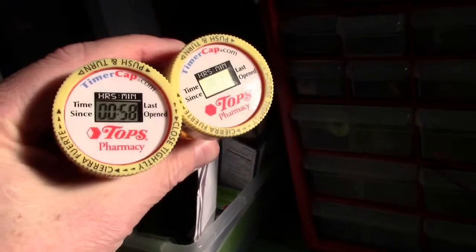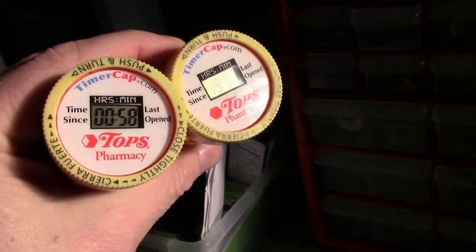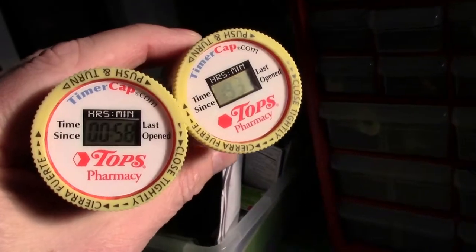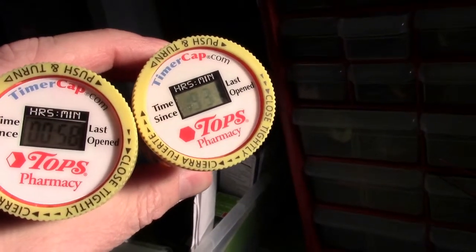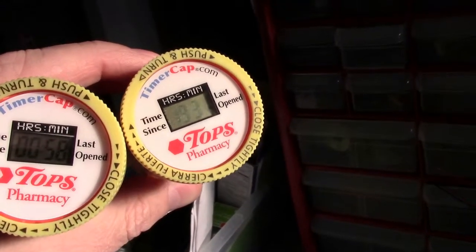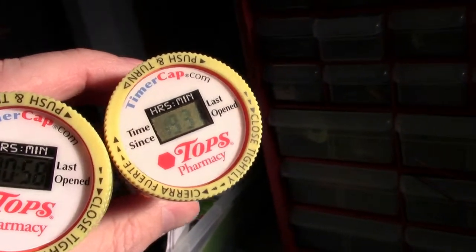Timer caps are darn useful. The timer cap on the left has a brand new battery in it so you can see how those numbers show up nicely. The one on the right has an older battery starting to fade out. They last about six or seven months, and that one's starting to fade out on me.